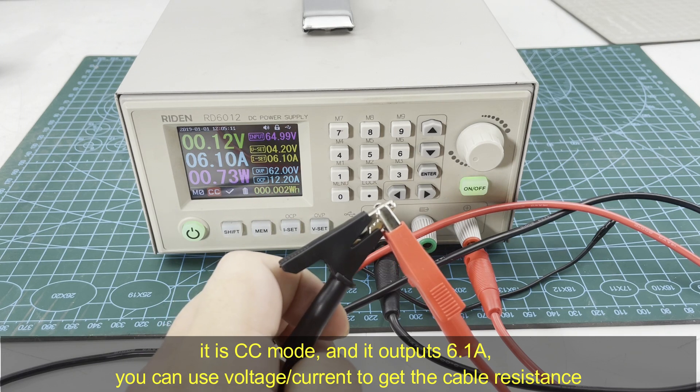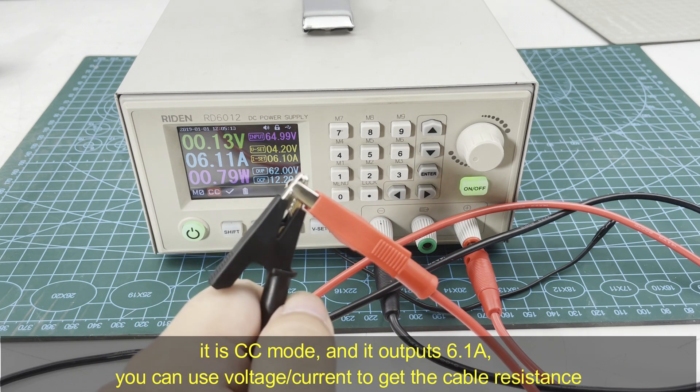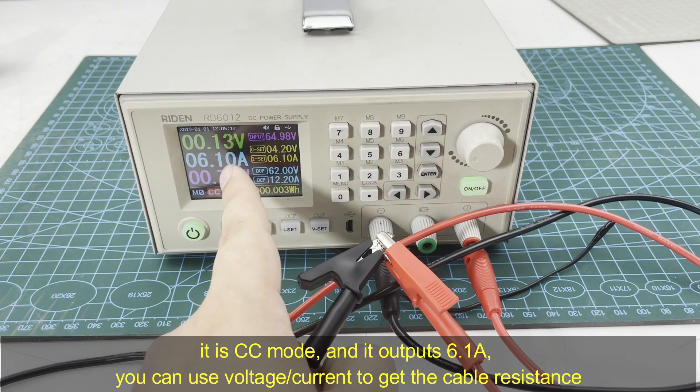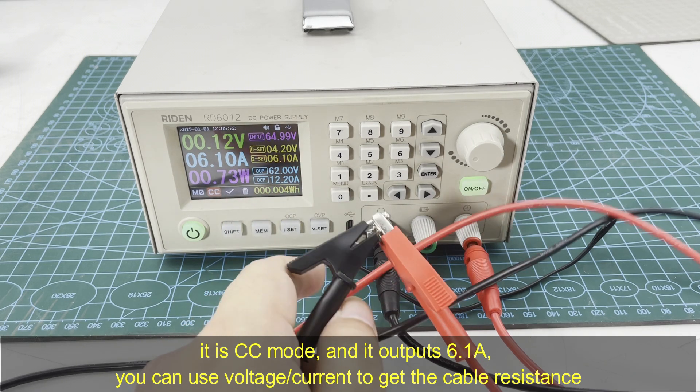You can calculate it in this way: voltage divided by current. You can see the cable resistance.